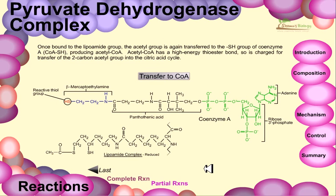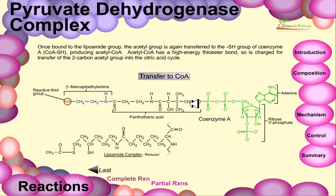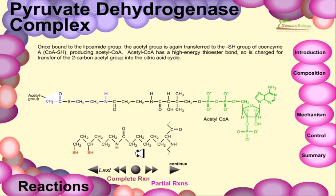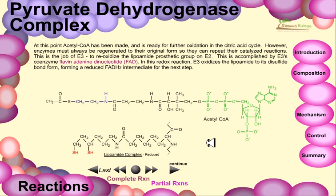Once bound to the lipoamide group, the acetyl group is transferred to the SH group of coenzyme A, producing acetyl-CoA. Acetyl-CoA has a higher-energy thioester bond and serves as the carrier for the two-carbon acetyl group into the citric acid cycle. The transfer involves the lipoamide complex and its reduced form, generating the acetyl-CoA product. At this point acetyl-CoA has been made and is ready for further oxidation in the citric acid cycle; however, enzymes must always be regenerated to their original form to repeat catalyzed reactions.